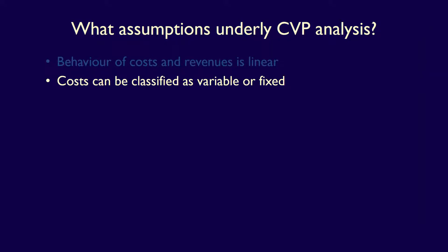All costs can be classified as either fixed or variable. This is important because some variable costs can be fixed, and some fixed costs can vary with the level of activity. For example, direct labor is treated as variable, but often, when individuals are paid a salary, direct labor is actually fixed. However, in CVP analysis, we assume that direct labor is variable, and that all fixed costs are fixed within the relevant range.